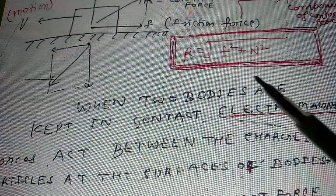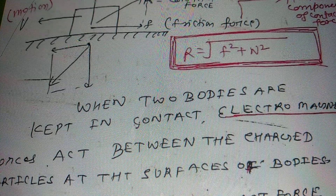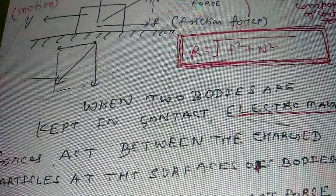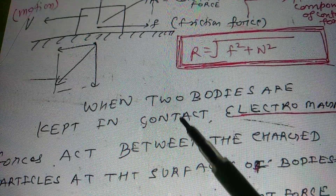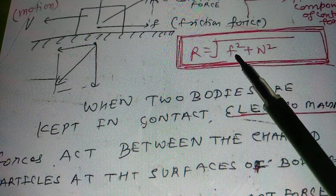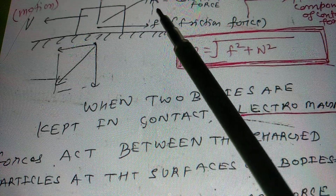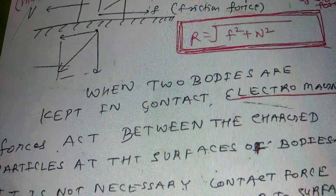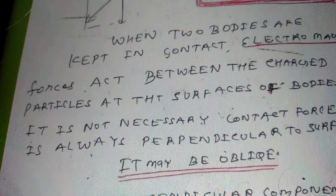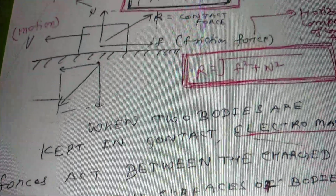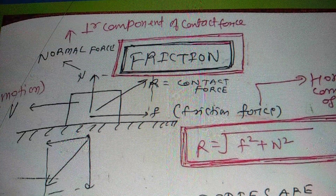Finally, R = √(F² + N²), where F is the frictional force and N is the normal force. So frictional force is the horizontal component of the contact force, and normal force is the vertical component of the contact force.